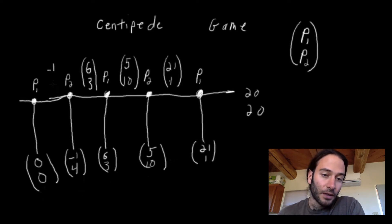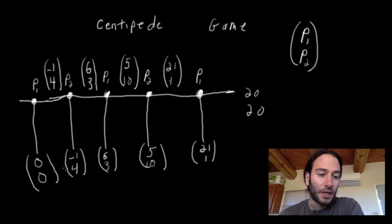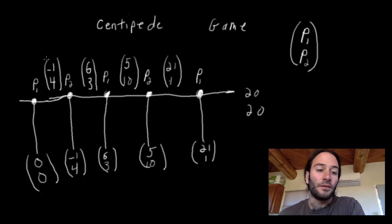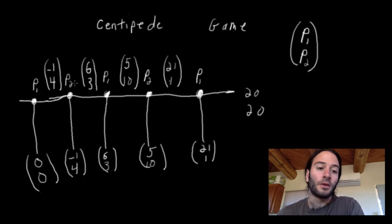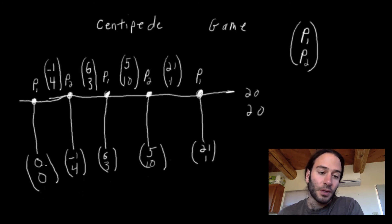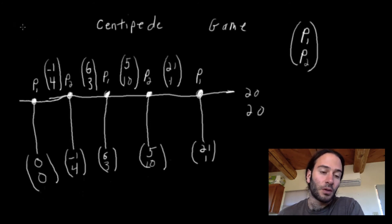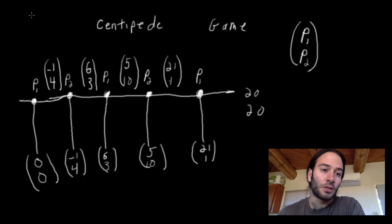Finally, in the first stage of the game, player one either chooses to stop or to keep going. It knows that if it chooses to keep going, it'll get a payoff of negative 1 because player two will choose to stop. But if it chooses to stop, it'll just receive 0. So player one will choose stop.